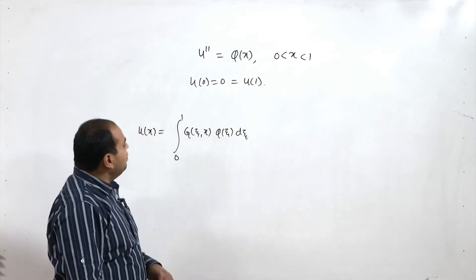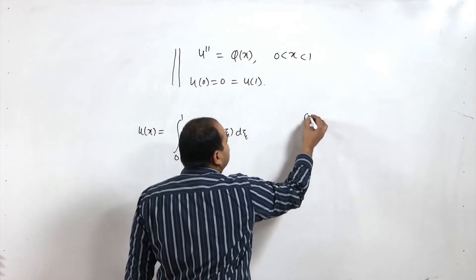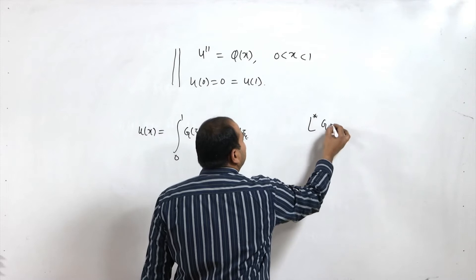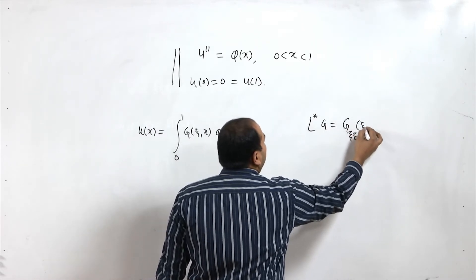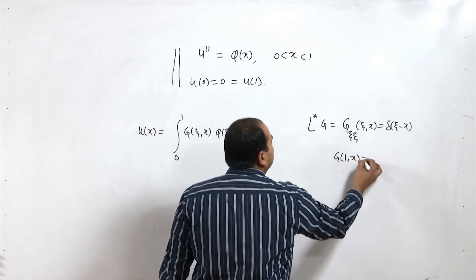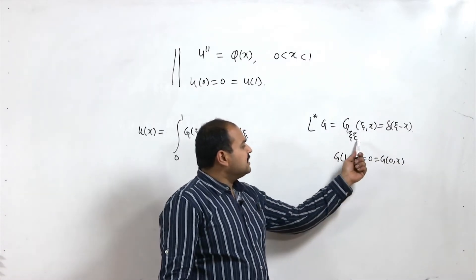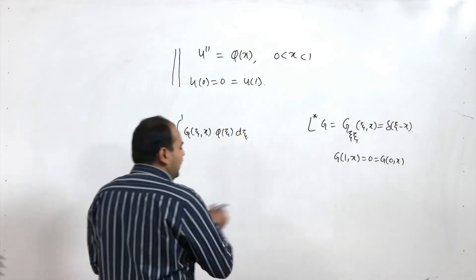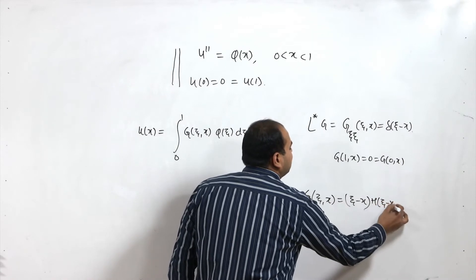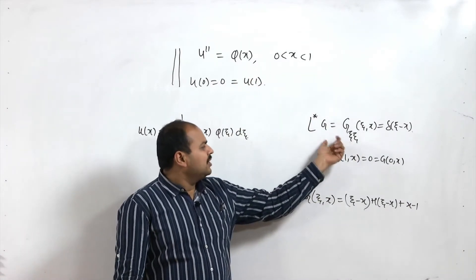Now we look at a more complicated example. Previously we solved our Green function by saying that g will satisfy L*g = g_ξξ = δ(ξ−x), with g(1,x) = 0 = g(0,x). We found g(ξ,x) by direct integration as (ξ−x)H(ξ−x) + x − 1. This was straightforward because the operator allowed simple integration.